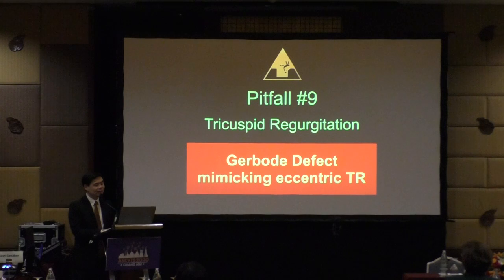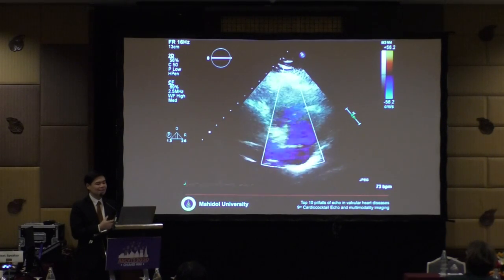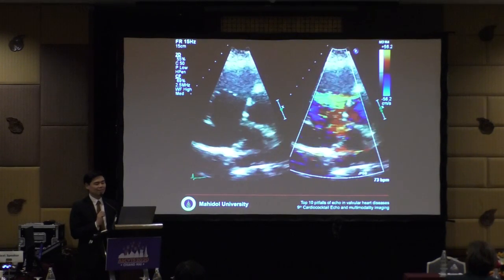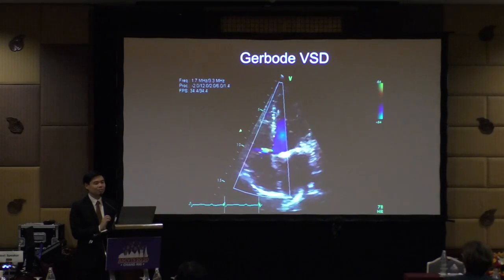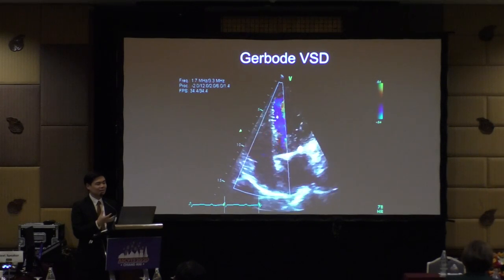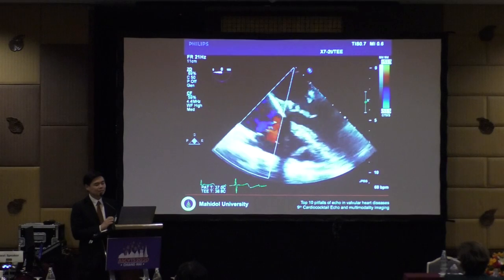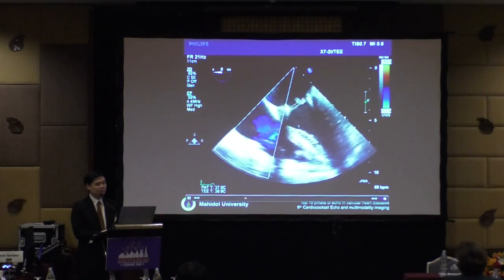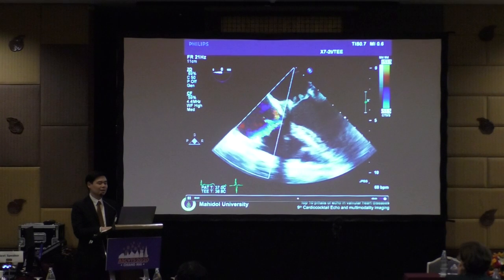Pitfall number nine: Gerbode defect mimicking eccentric TR. A fellow presented images as severe TR with a gradient of 105 suggesting severe pulmonary hypertension. But looking carefully, the jet originated mainly from the aorta, and four-chamber view confirmed a Gerbode defect — causing falsely high RVSP. Another example showed infective endocarditis of the mitral valve causing a crux abscess and Gerbode defect from LV to RA, also mimicking TR with pulmonary hypertension.